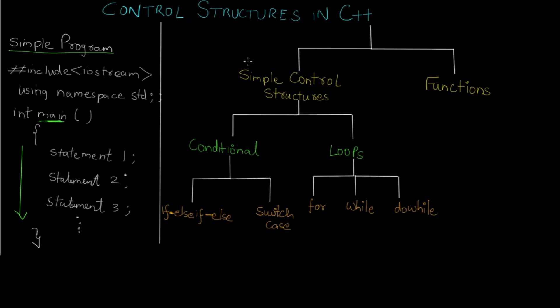On the right side of the screen you can see I have categorized these control structures in two different types. The first two types are simple control structures and functions. Under simple control structures you have conditional structures and loops. Conditional structures are when you have a condition depending on which the further execution is to be decided. They include if-else-if-else condition structure and switch case structure. We will be seeing these structures in the further tutorial. This is just the theory part.